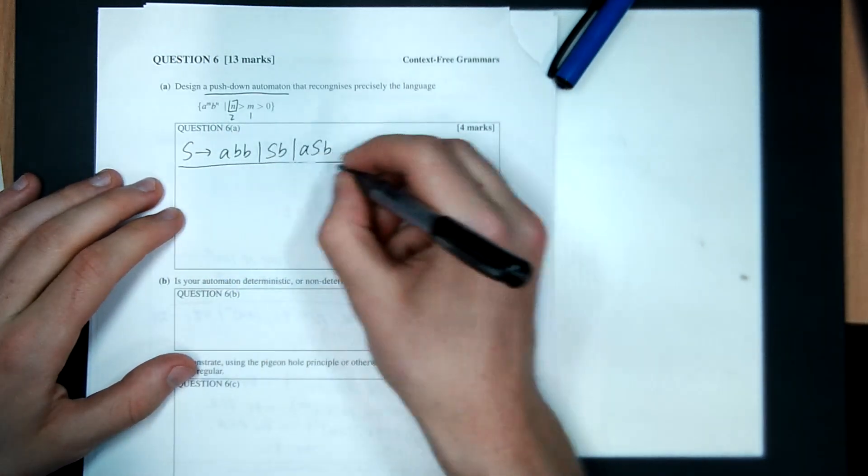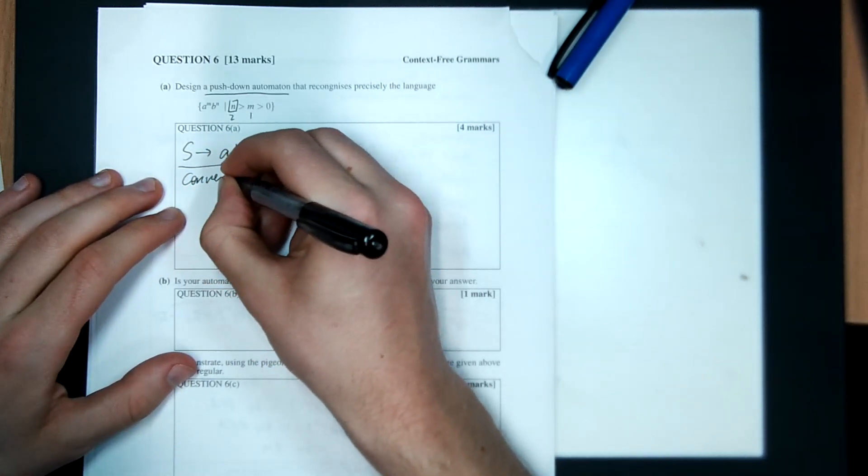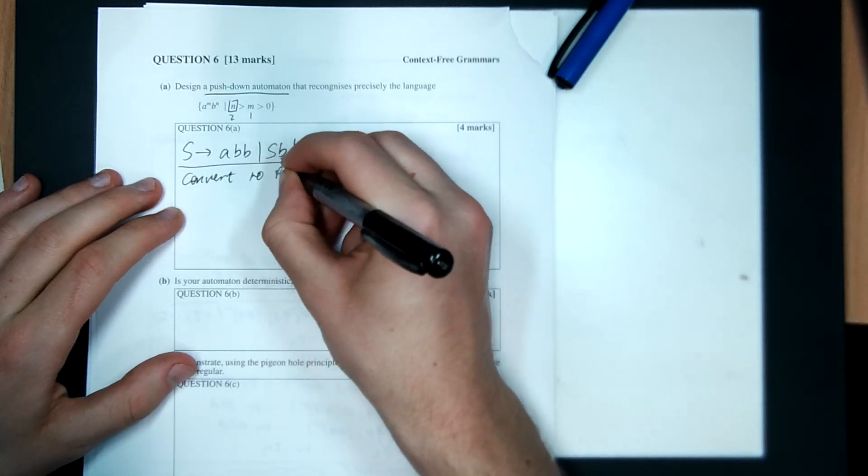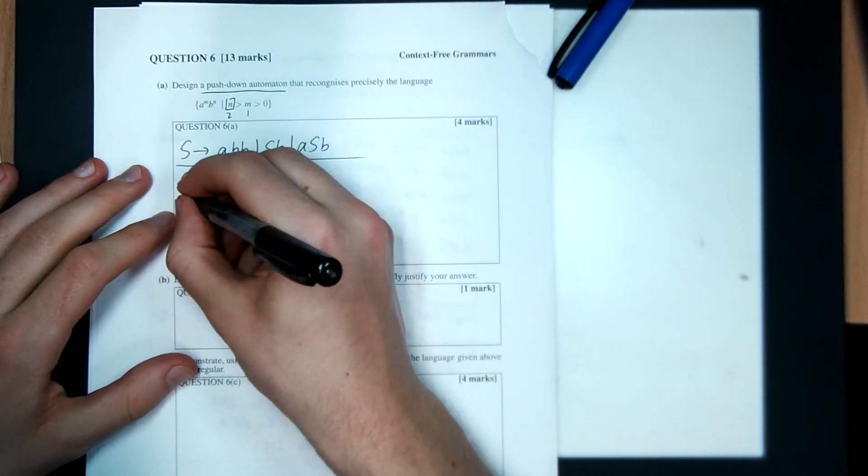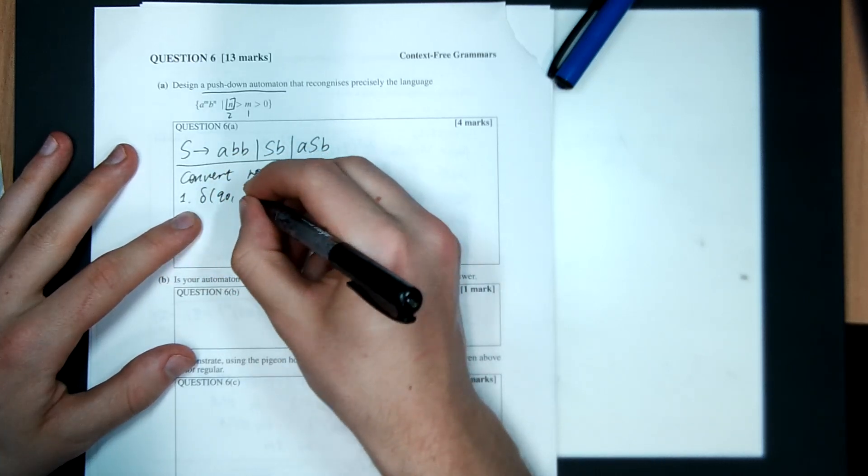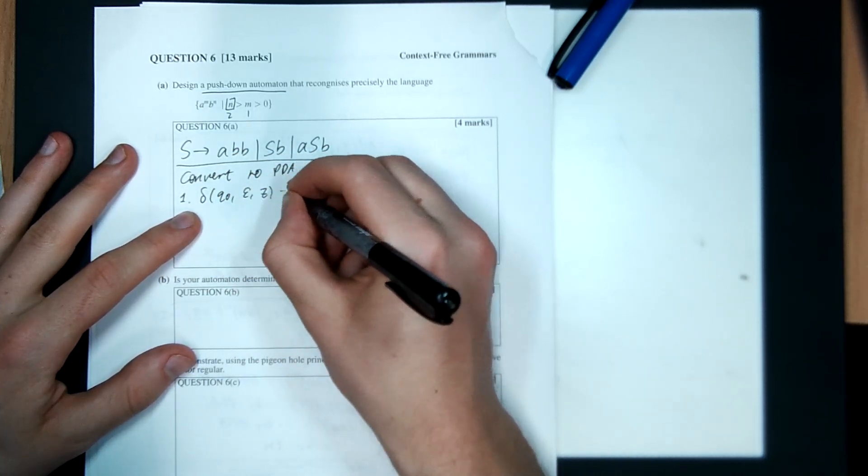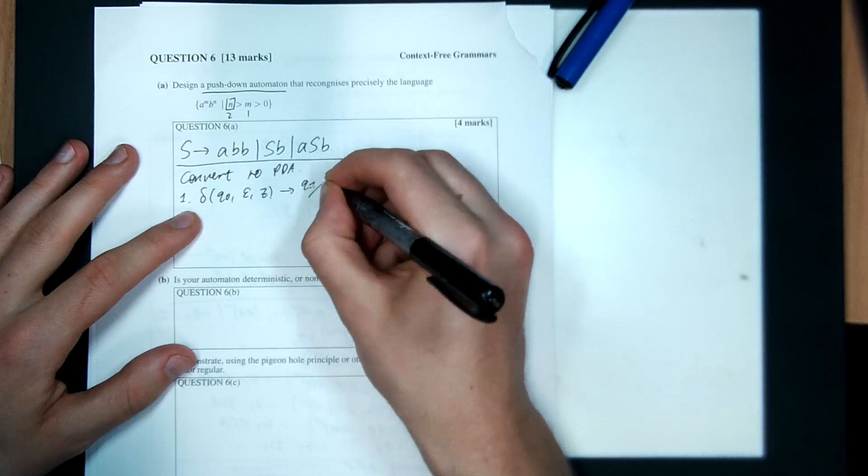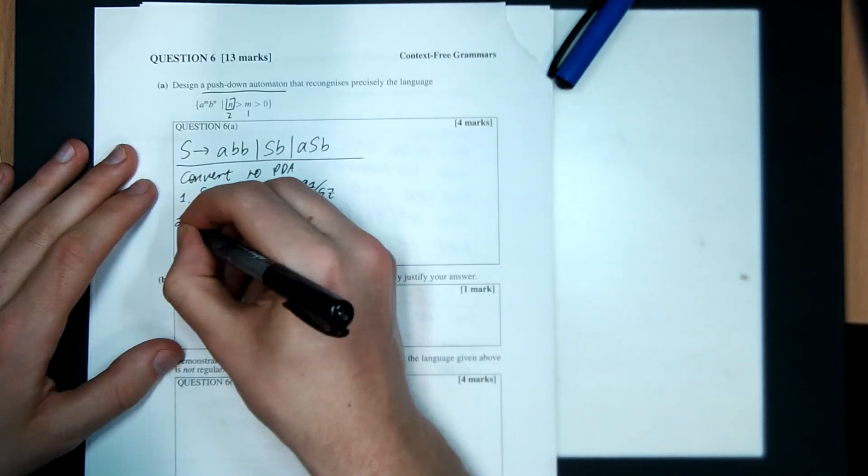And now we've got to convert to a PDA. So we just do the magic conversion algorithm. Step one is initialize. If I'm in the starting state, ignore the input, see the start of stack symbol, go to Q1 and push SZ.